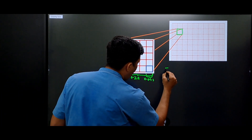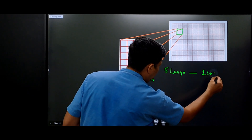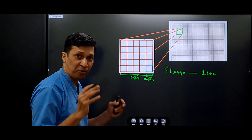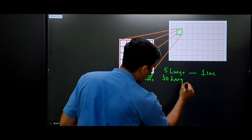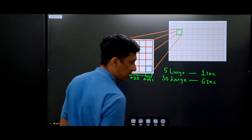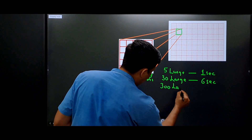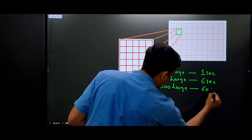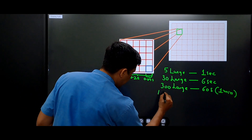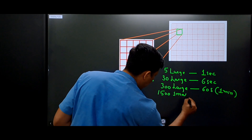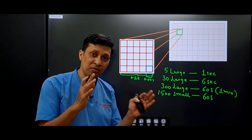Using this: 5 large squares will make 1 second (0.2 × 5 = 1). Therefore, 30 large squares will make 6 seconds, and 300 large squares will make 60 seconds, or 1 minute. If you use the same thing for small squares, then 1500 small squares will make 60 seconds. All these calculations will help us in understanding the formulas.